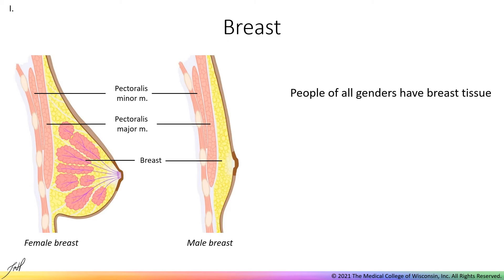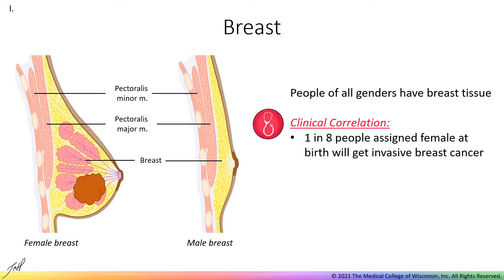We will begin with the breast. Breasts are located on the anterior chest wall, superficial to the pectoralis major muscle. Although everyone has breasts, they become more developed in response to certain hormones and vary greatly in size between individuals. Pathology of the breast, specifically breast cancer, is a big issue clinically. In fact, one in eight people assigned female at birth will suffer invasive breast cancer in their lifetime. However, note that a person can develop breast cancer regardless of biological sex.